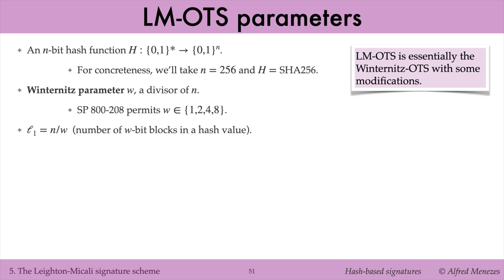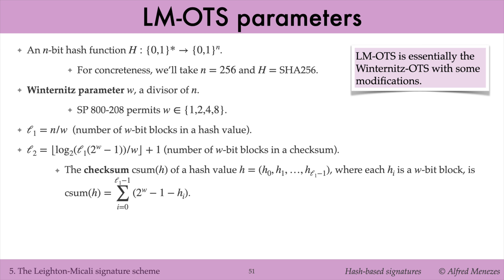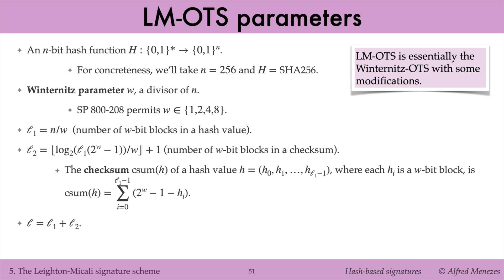L1 denotes the number of W-bit blocks in a hash value. L2 denotes the number of W-bit blocks needed for a checksum. Recall that the checksum of the hash value H is defined to be the sum of the terms 2 to the power W minus 1 minus H_i, where the H_i are the W-bit blocks of H. Finally, the total number of hash chains is denoted by L, which is the sum of L1 and L2.